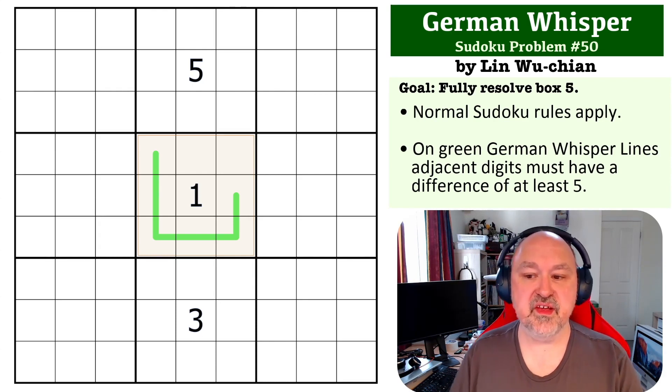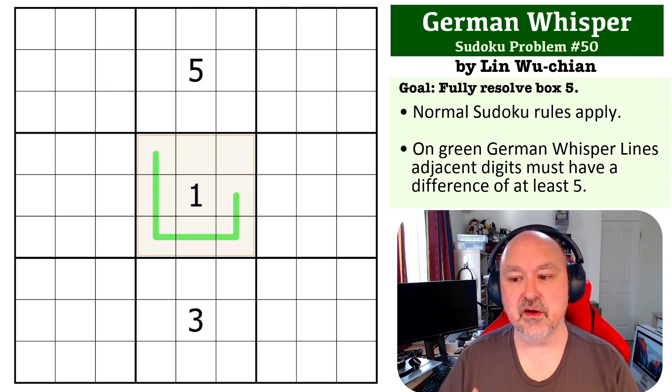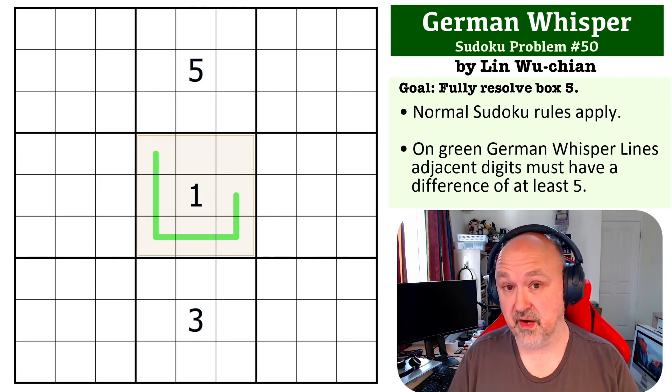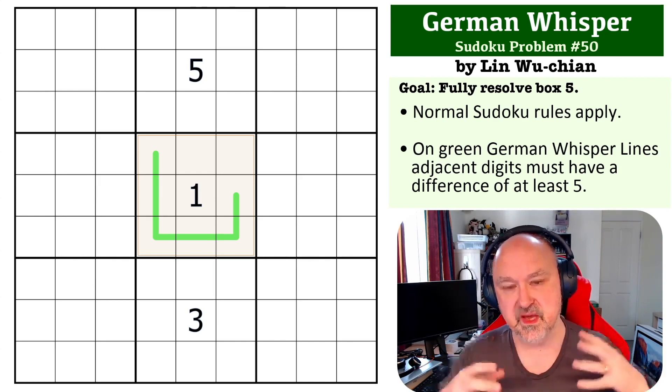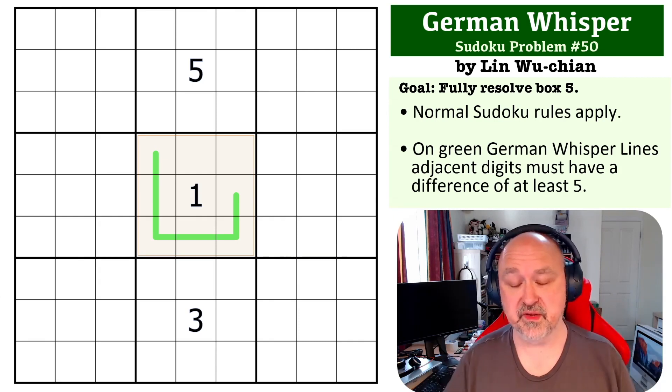Okay, so yeah, the trick with German Whispers, of course, is the adjacent digits must have a difference of at least five. So because of that, you can never put five on a whisper line, and digits very close to five must be also incredibly restricted.